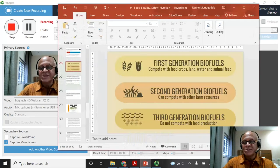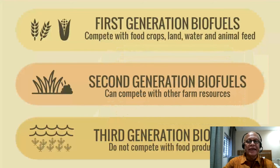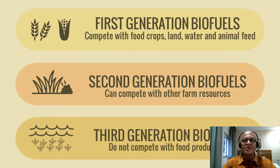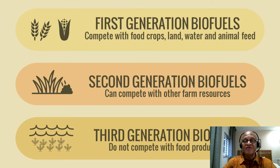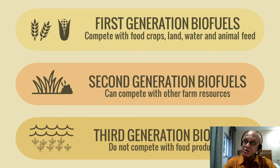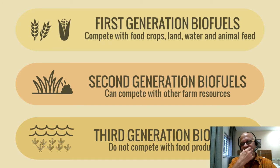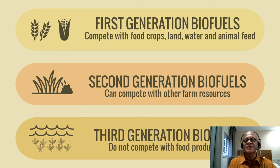Mitigation of climate change and adaptation to climate change are critical. In the context of agriculture, considering agriculture is such a big contributor to greenhouse gases as well as several other environmental effects like eutrophication, we want to be able to make agriculture more climate-friendly and environment-friendly. Surprisingly, climate adaptation and climate change mitigation also include things like biofuels, for example.